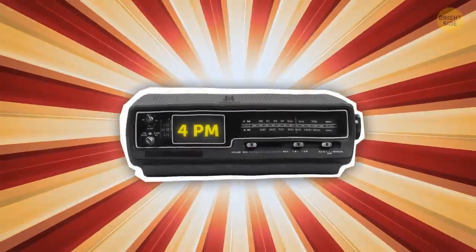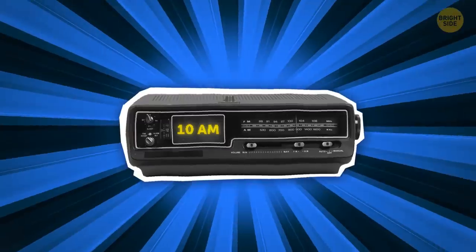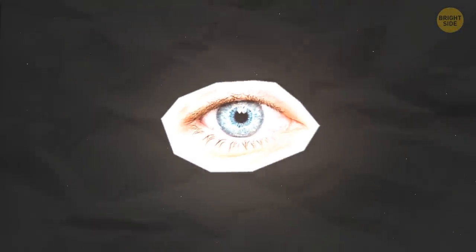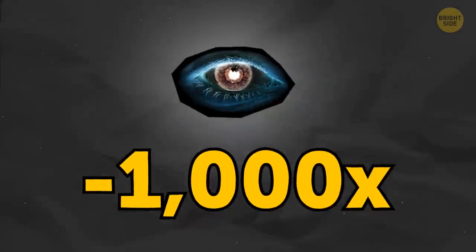Your body emits visible light. You're the brightest at 4 p.m., and your glow is the least visible at 10 a.m. Unfortunately, this glowing is 1,000 times less intense than what your eyes can see.